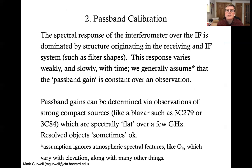The second step is passband calibration. The spectral response of the interferometer over the frequency band that's received is dominated by structure originating typically in the receiving and IF system. There's filter shapes. This response varies weakly and slowly with time. So we generally assume that the passband gain is constant over an observation. This isn't strictly correct because the passband also includes atmospheric effects. Particularly in the millimeter and sub-millimeter, the Earth's atmosphere has a lot of spectral structure due to water vapor, also ozone, and to smaller amounts of oxygen in particular locations and even things like CO in the Earth's atmosphere can be detected and affect your observations.